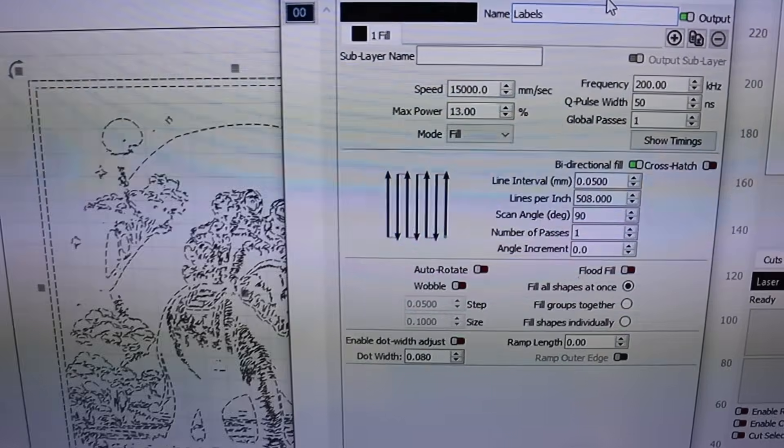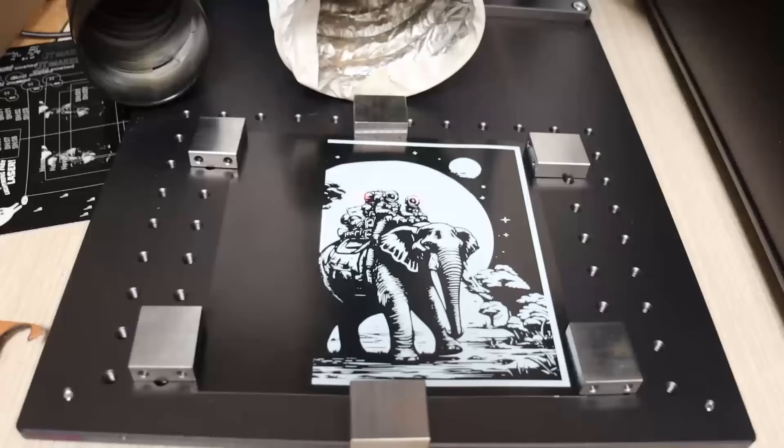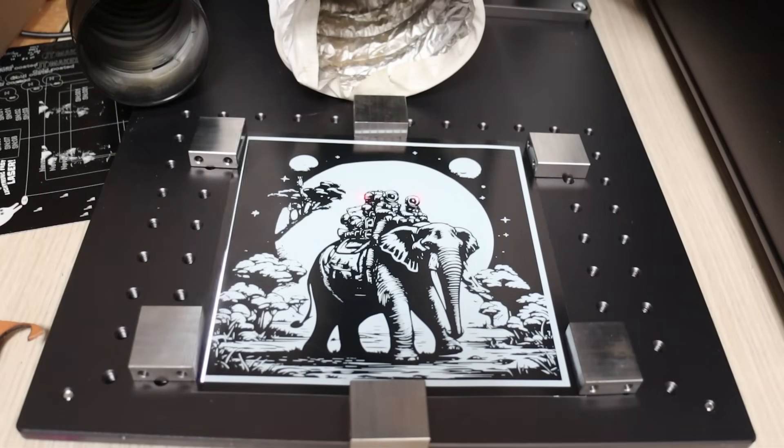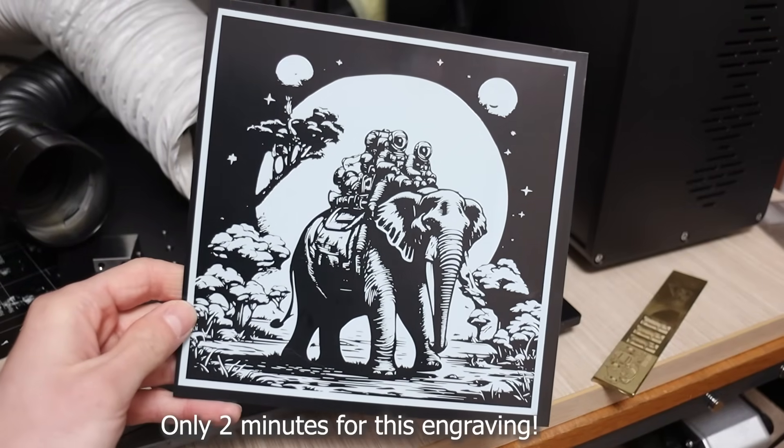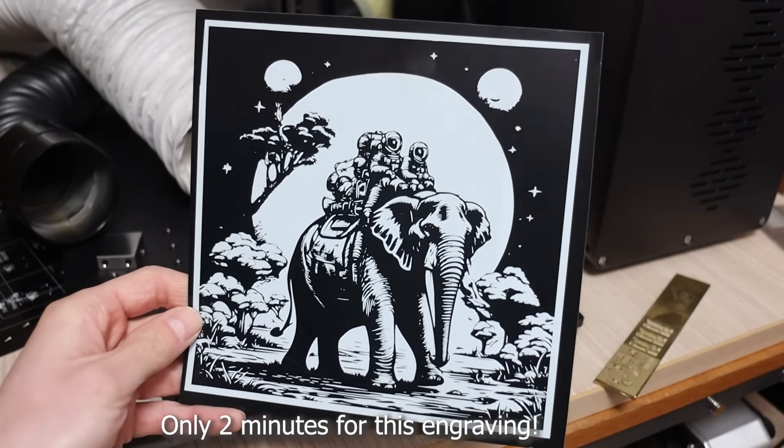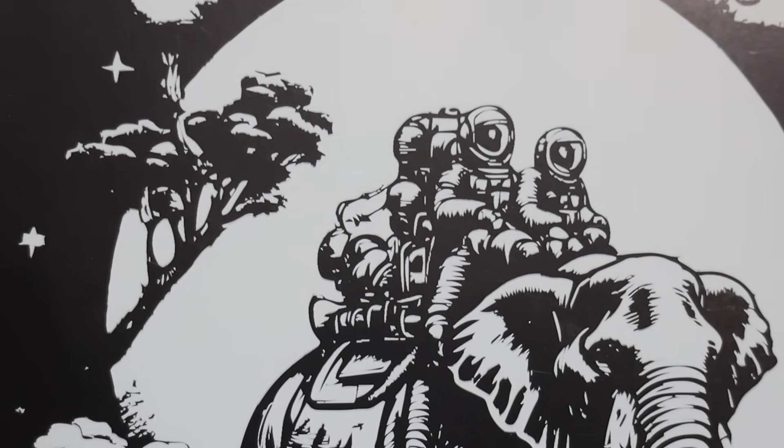The CommMarker Titan 1 boasts engraving speeds of up to 15,000mm per second, so I tested this by engraving a large photo onto marking paper at full speed. The results were incredible. It completed the entire photo in under 2 minutes while maintaining an astonishing level of detail. I was blown away!